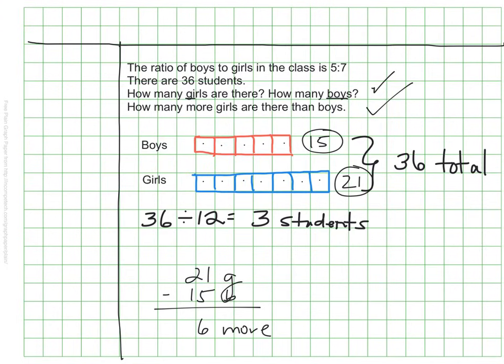Remember the essential question for this video is: how can we use tape diagrams to model and interpret ratios? This is just a small piece of what we can do with tape diagrams — we can use them for more complex problems, and we will do more of that in the future in class and perhaps in another video. But right now we just want to introduce what a tape diagram is. If this seems a bit confusing, be sure to go back and re-watch it and come in with questions for class.